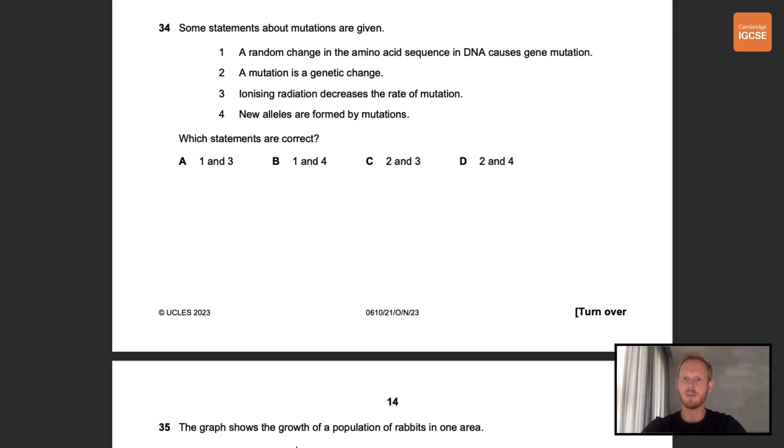Number 34. Some statements about mutations are given. Which statements are correct? Number 1, a random change in the amino acid sequence of DNA causes gene mutation. This is wrong. It's a random change in the base sequence of DNA that causes gene mutation. Number 2, a mutation is a genetic change. Correct. Number 3, ionizing radiation decreases the rate of mutation. This is wrong as ionizing radiation increases the rate of mutation. And finally number 4, new alleles are formed by mutations. This one is also correct. So the correct statements are 2 and 4. So the right answer is D.